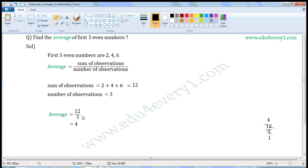Let us simplify this in the rough work. Common factor of 12 and 3 is 3. Divide both of them with the common factor. 12 when divided by 3, we get 4.